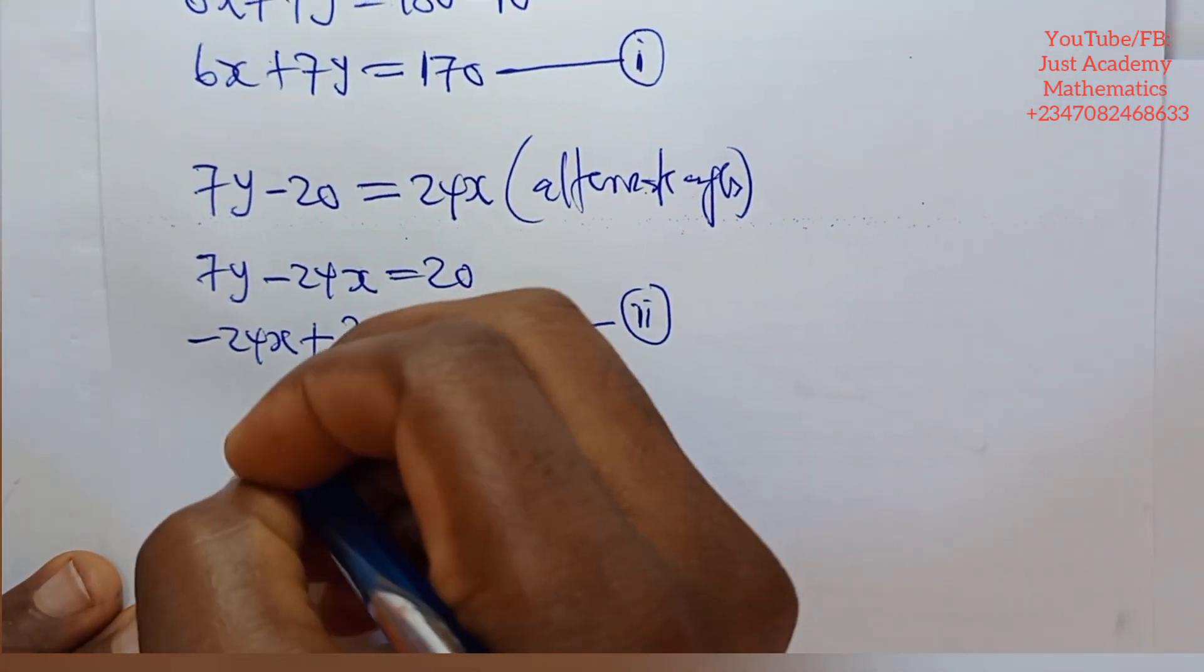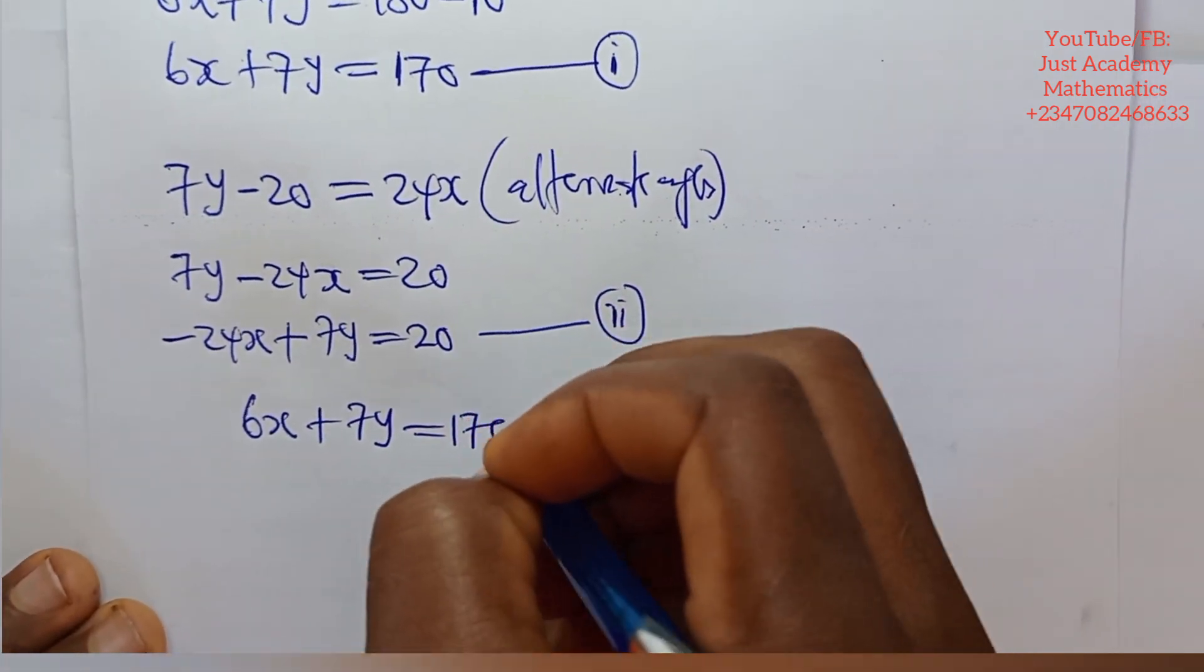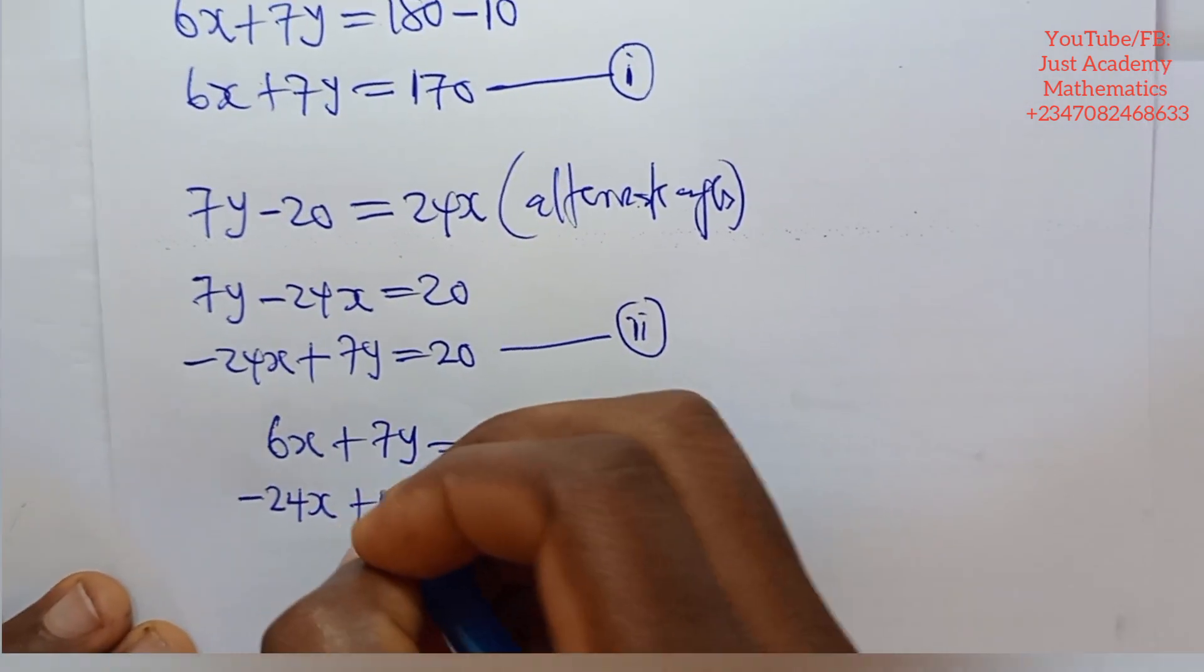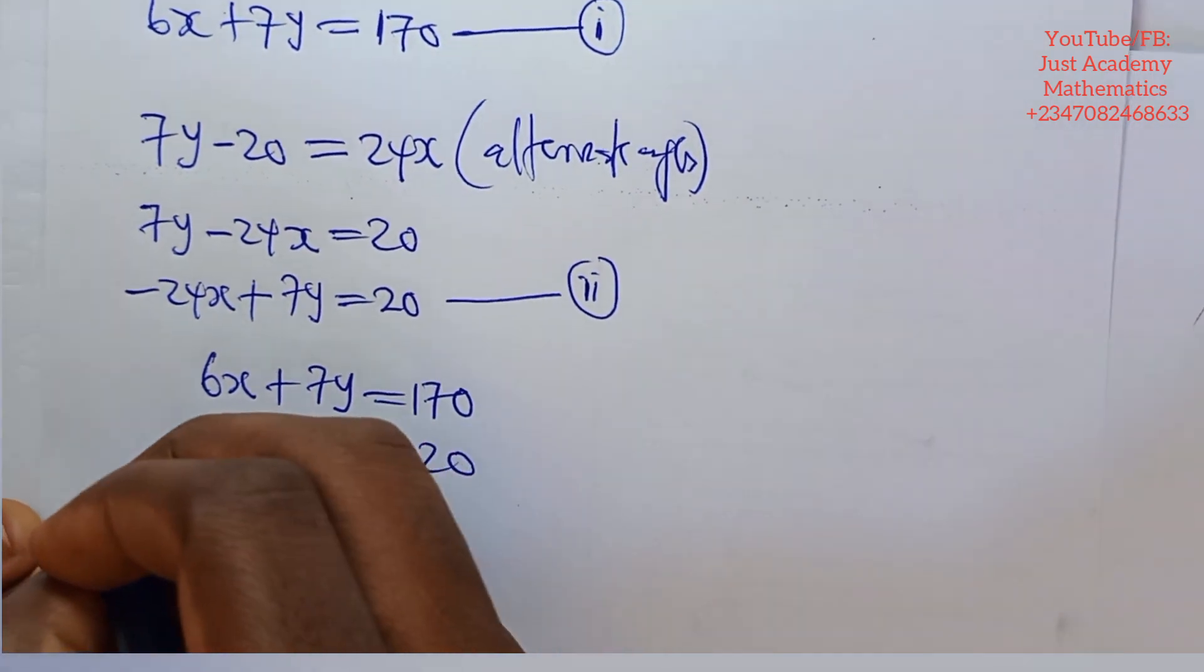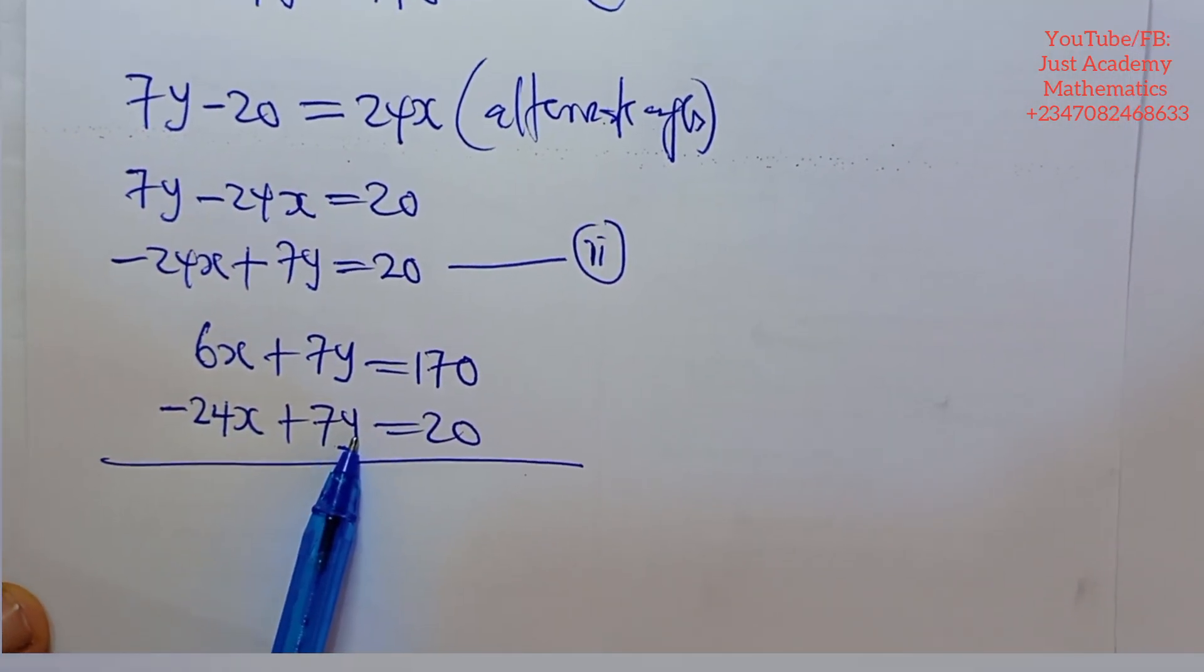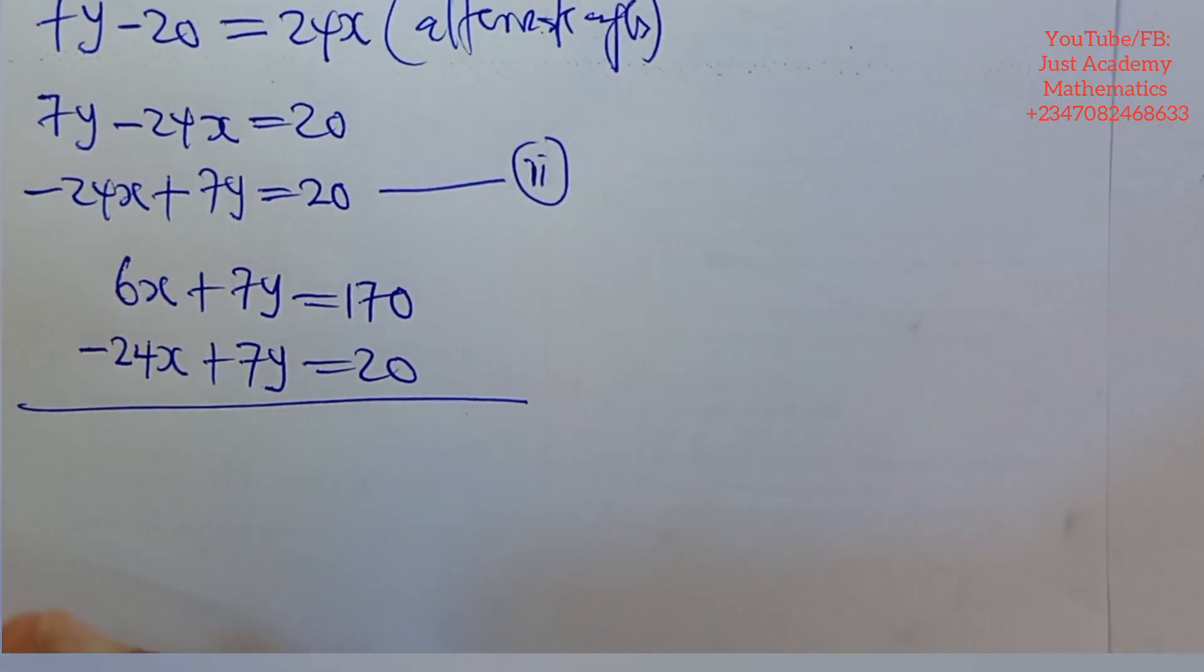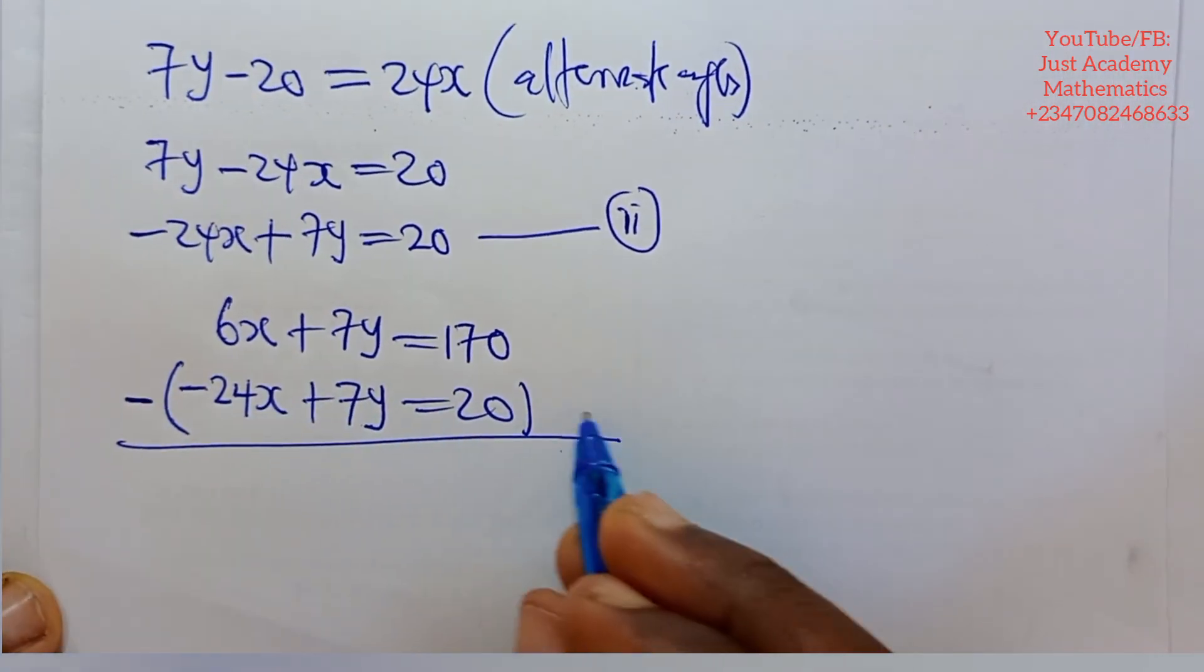Look at equation 1. 6x plus 7y equals to 170. Equation 2. Minus 24x plus 7y equals to 20. Now, the way it is now, this plus this will give us 14. But if we want to eliminate this y, we have to introduce minus here. Let this minus times the whole of this equation.